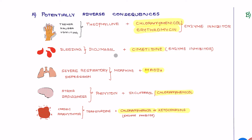The second example: when you combine dicumarol with cimetidine — cimetidine is an enzyme inhibitor which increases the concentration of dicumarol, increasing the risk of bleeding. When you combine morphine with a monoamine oxidase inhibitor, this enzyme inhibitor prevents morphine metabolism, so morphine concentration increases, causing adverse effects like severe respiratory depression. When you combine phenytoin with dicumarol or chloramphenicol, these inhibit phenytoin metabolism, increasing phenytoin concentration and leading to adverse effects such as ataxia and drowsiness.